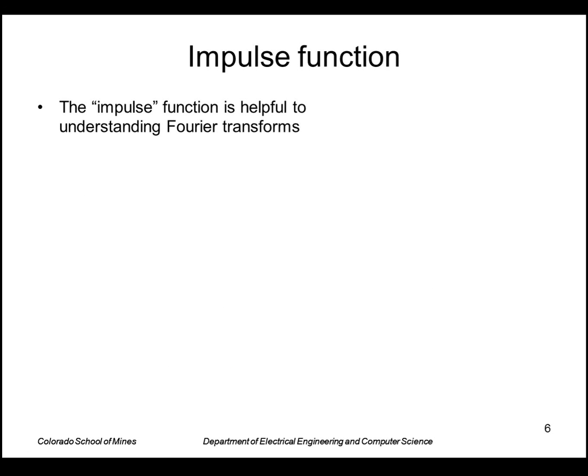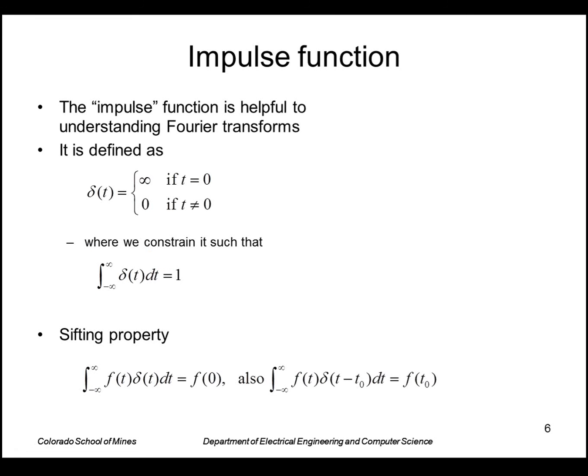The impulse function is helpful to understanding Fourier transforms. The impulse is defined as this delta function, which is zero everywhere except at t equals zero when it's infinity, but we constrain it such that the total area integral of that is equal to one. So the sifting property says if we integrate any function multiplied by the impulse from minus infinity to infinity, we just pick out the zero term because delta is zero everywhere except for t equals zero.